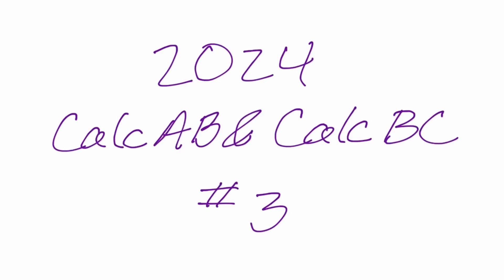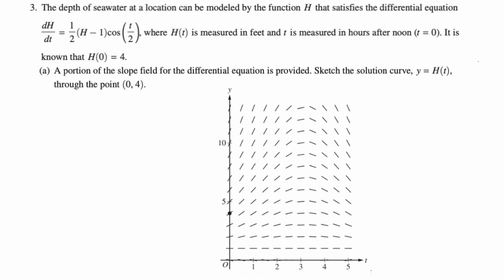Okay, in this video we're going to be doing 2024 Calc AB/BC number 3. It's a slope field differential equation problem. The depth of seawater at a location can be modeled by the function h that satisfies the differential equation dh/dt is one half quantity h minus one cosine of t over two, where h of t is measured in feet and t is measured in hours after noon, which is t equals zero. It is known that h of zero equals four.